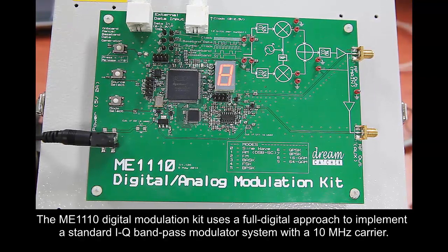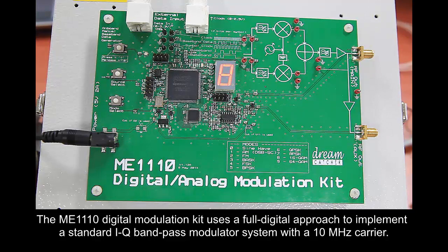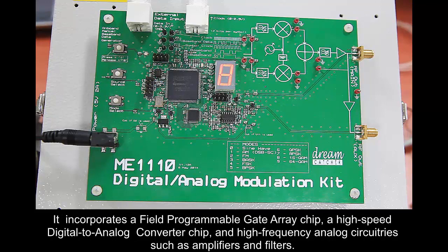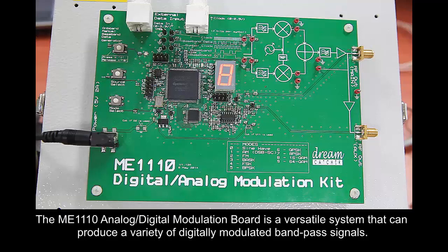The ME1110 digital modulation kit uses a full-digital approach to implement a standard IQ band pass modulator system with 10 MHz carrier. It incorporates a field programmable gate array chip, a high-speed digital to analog converter chip, and high-frequency analog circuitries such as amplifiers and filters. Various probing points are also available for you to study and analyze the effect of the modulated signal at various stages.